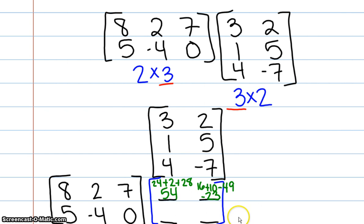Now that we're done with the top row, we're going to move on to the bottom. It works the same way. 5 times 3 is 15. Negative 4 times 1 is negative 4. 0 times 4 is 0, and add together is 11.